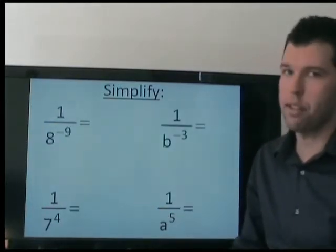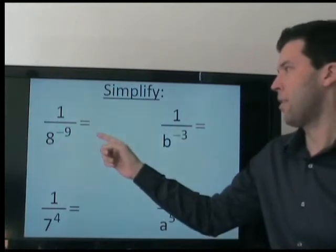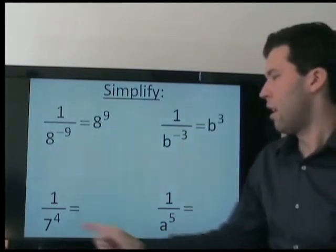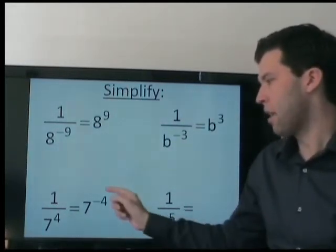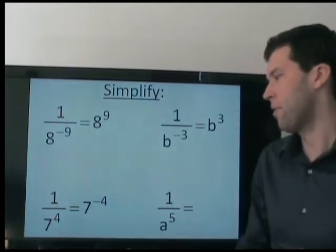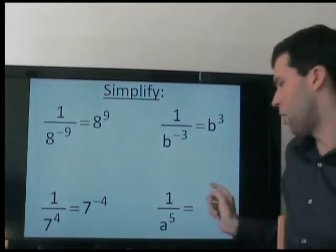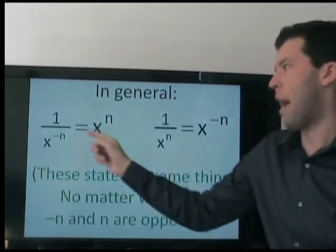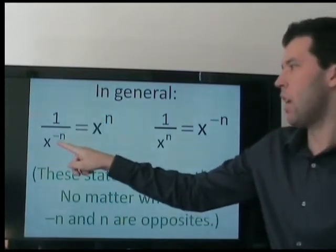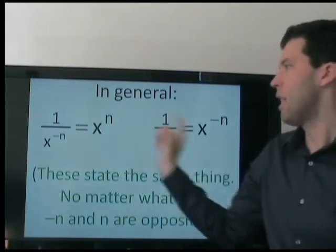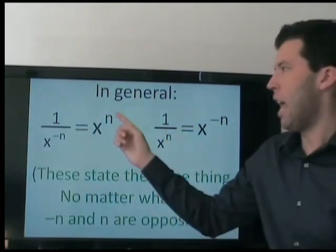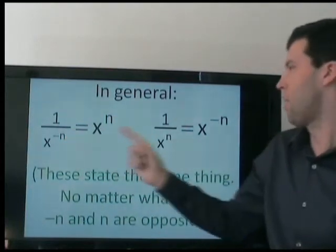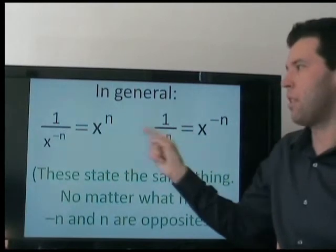So using that same process, we can write 8 to the positive 9th, b to the positive 3rd, 7 to the negative 4th — again, this just means we're dividing by the base 4 times — and a to the negative 5th. So in general, we can rewrite a power as its reciprocal but to the opposite exponent. These are stating the same thing — don't be confused. n and negative n are just opposites. So whatever number this is, this is the opposite, and these are the same thing.